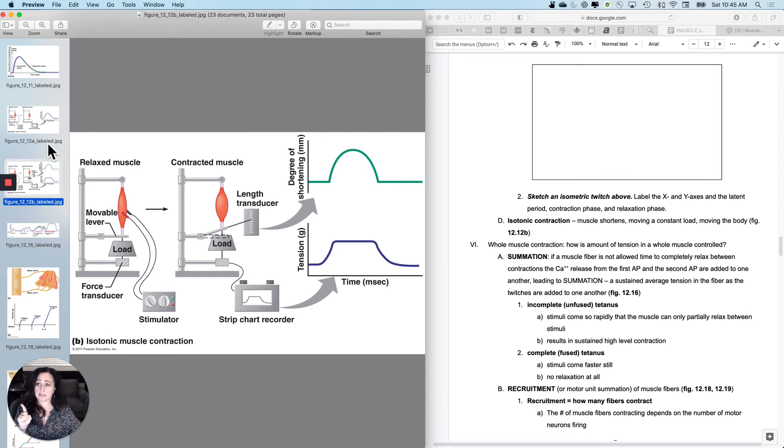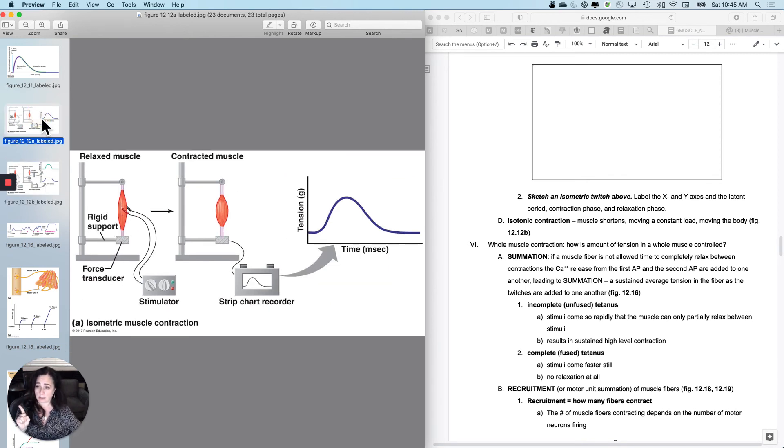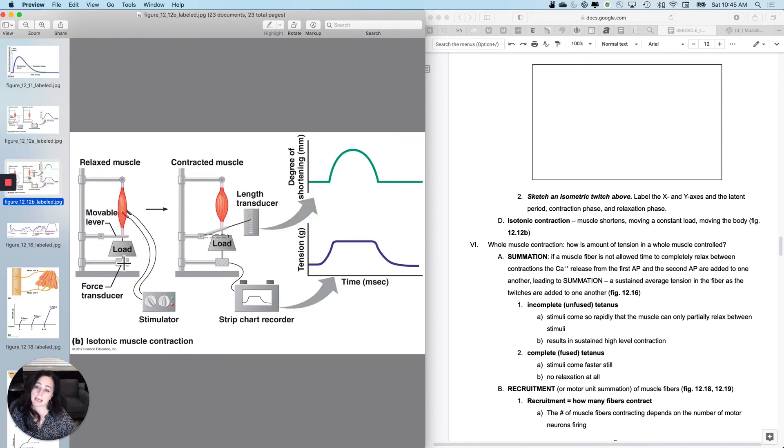The difference between this setup and an isometric contraction setup is that I make the load movable with the amount of tension that that muscle can generate. And so what's going to happen is this is on a lever, right? And I'd have to experiment with this to make sure that the tension that muscle can generate could actually overcome the load that I'm using. And I'm going to stimulate it. And I am not only measuring the degree of tension, I'm also measuring the length, the shortening.